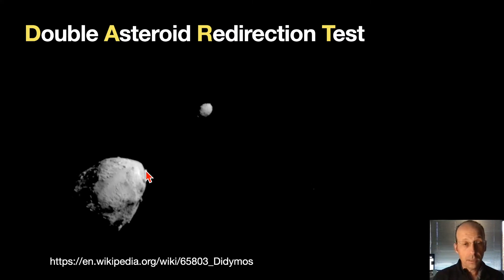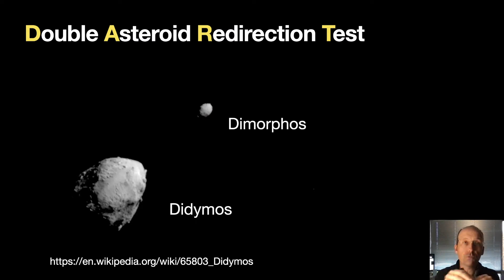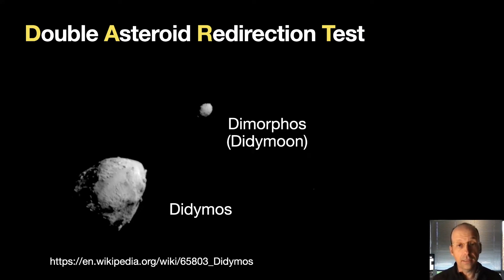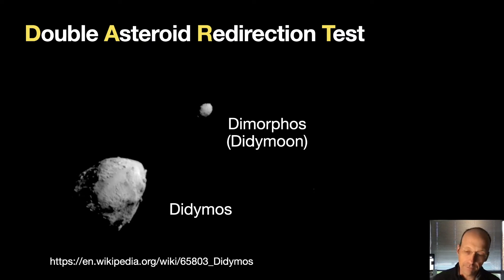This is a twin system — Didymos and Dimorphos. Didymos is the bigger one, and these images were taken from the DART impactor before it collides. They're really nice images. Some people called it the Didymoon, because it's the moon of the asteroid Didymos, which I actually like better than Dimorphos.